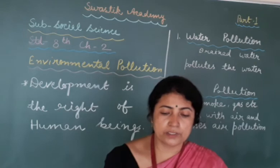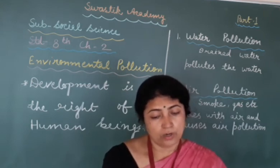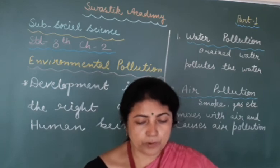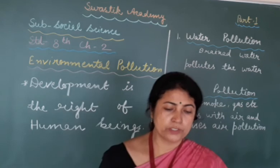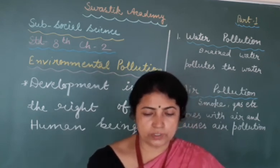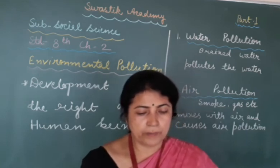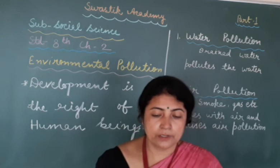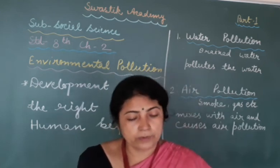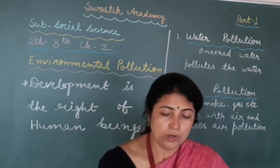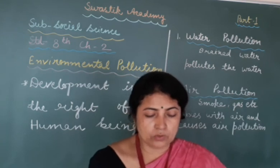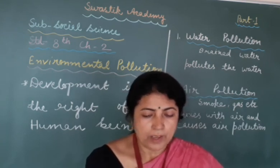To prevent air pollution, it is necessary to make certain rules for industries and implement them strictly. Equipment should be developed which helps control the emission of smoke and poisonous gases. Environment awareness campaigns should be organized. Industrial firms which do not follow the norms should be punished strictly and shut down. One should use petrol and diesel in an optimum manner, and pollution-free fuels like CNG and PNG will help to a great extent.